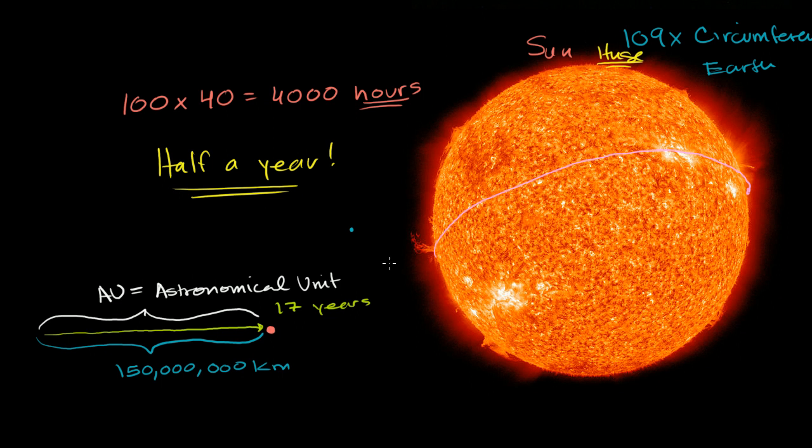Or another way to visualize it, this Sun right over here, it looks on my screen, it has about a five or six inch diameter. If I were to actually do it to scale, this little dot right here, this little dot which is the Earth. If I actually wanted to draw this distance at scale, I would have to put this speck about 50 feet away from the Sun. 50 or 60 feet away from the Sun.